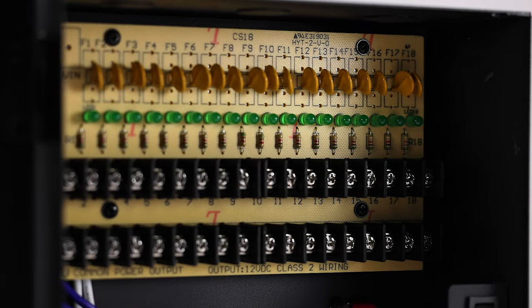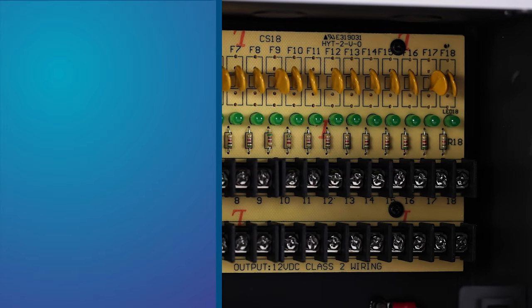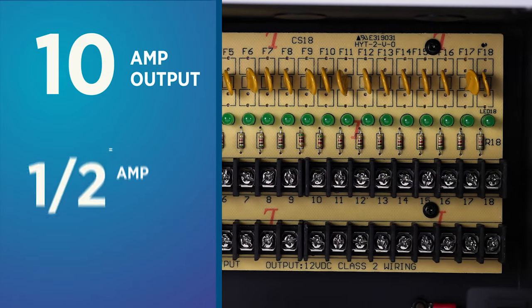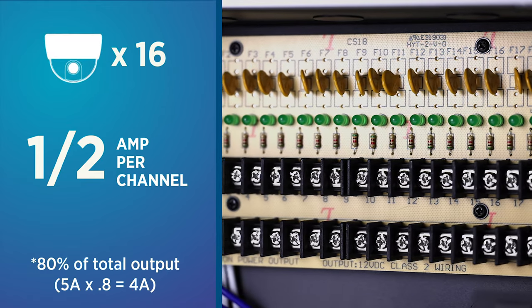The AC24V18 power supply features a total output of 10 amps, equating to a half amp per channel when connecting 16 cameras and following the 80% rule.